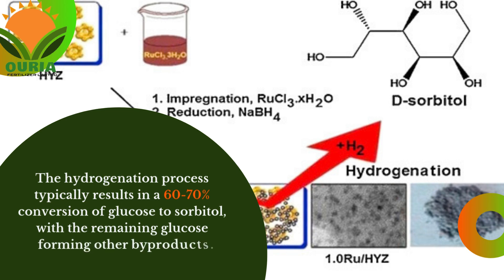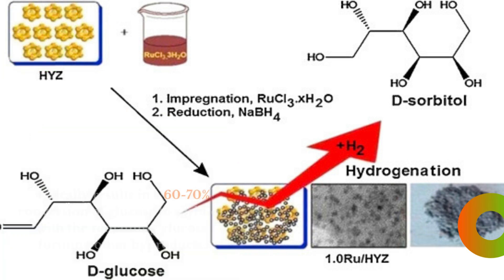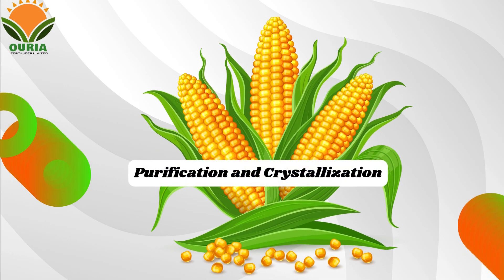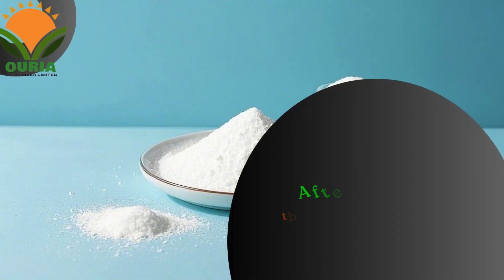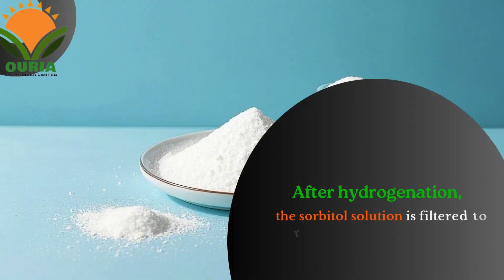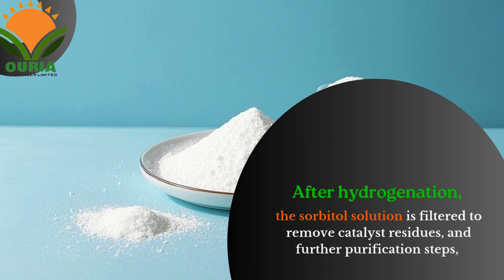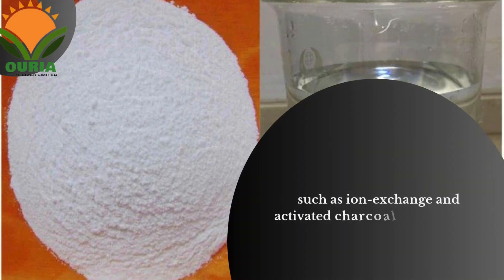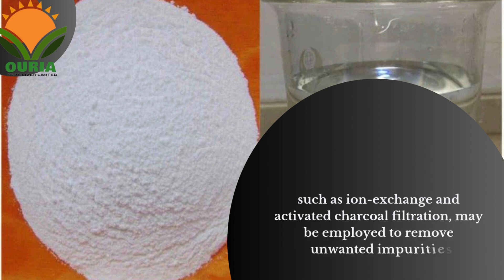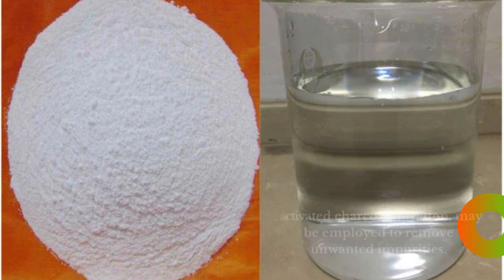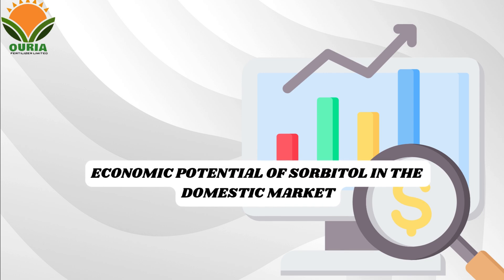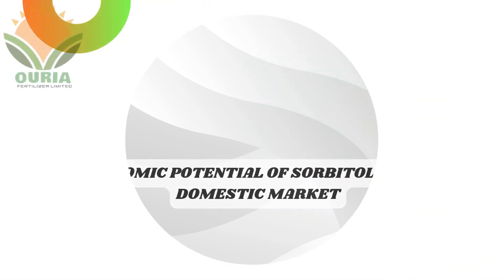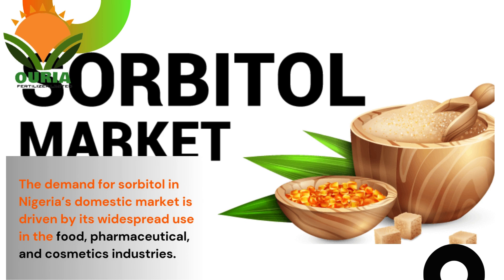Purification and crystallization: After hydrogenation, the sorbitol solution is filtered to remove catalyst residues. Further purification steps such as ion exchange and activated charcoal filtration may be employed to remove unwanted impurities.